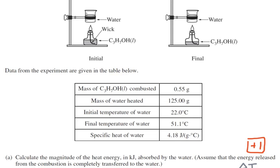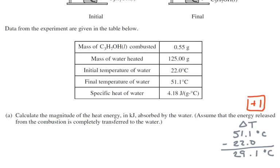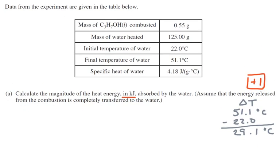From the data in the experiment given in the table below, our first question is to calculate the magnitude of the heat energy in kilojoules absorbed by the water. Keep in track, they want kilojoules. So we want to get the magnitude of the heat and assume that the energy released from the combustion is completely transferred to the water. So we're doing a calorimetry experiment, and we know that's going to be the equation Q equals mc delta T.